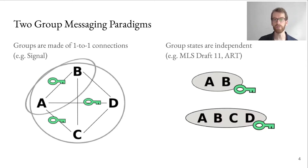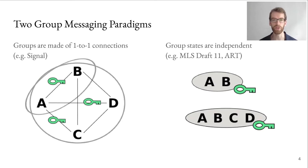On the other hand, we have the second paradigm where each of the two groups is independent. So we have one group including only A and B, and one group including A, B, C, and D, but they do not share any key material.